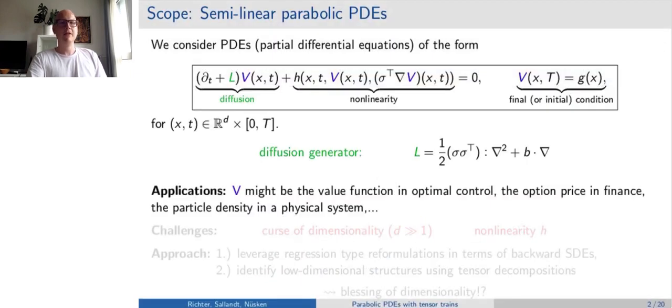As the title suggests, we're interested in PDEs such as those appearing in the box. In particular, we are after this function v that depends on both space and time, so x and t. In applications, v might often be the value function in an optimal control problem, the option price in finance, or it might represent the particle density in a physical system.